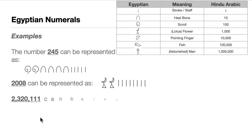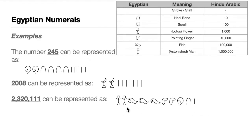The number 2,320,101 is written as: two men (2,000,000), three fish (300,000), two pointing fingers (20,000), one scroll (100), one heel bone (10), and one stroke (1).